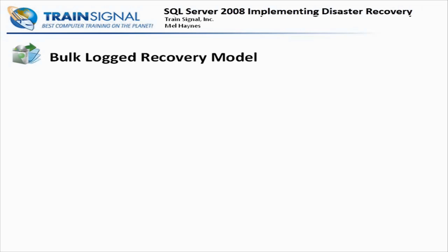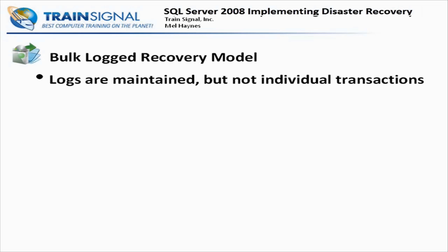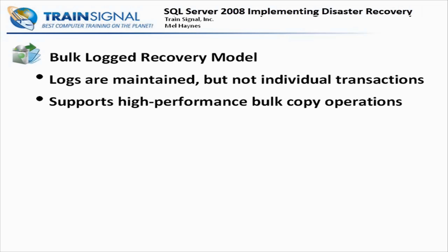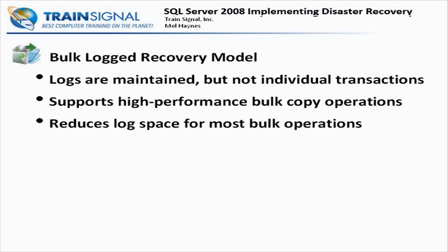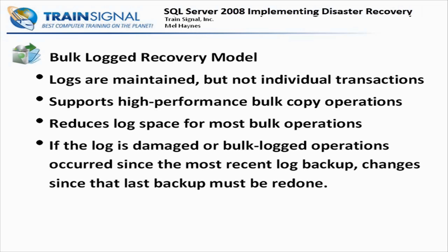Let's talk about the bulk logged recovery model. Bulk logged recovery is an adjunct — to use a Microsoft term — to the full recovery model. Logs are still maintained, but you just don't get every transaction. One benefit is if you have high-performance bulk copy operations, you're not recording every single transaction that's part of that bulk copy — the log will only show that a bulk transaction occurred. There's also the disk space benefit since you don't have each transaction recorded. But the downside is you don't have the ability to go back to a specific point in time during that bulk copy — you get all of it or nothing.